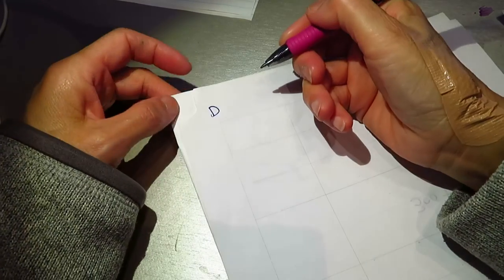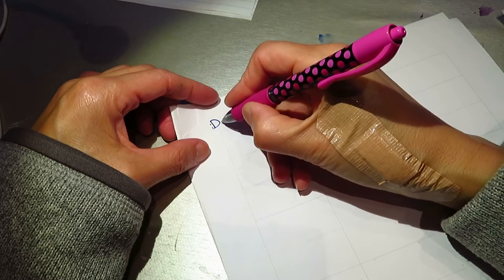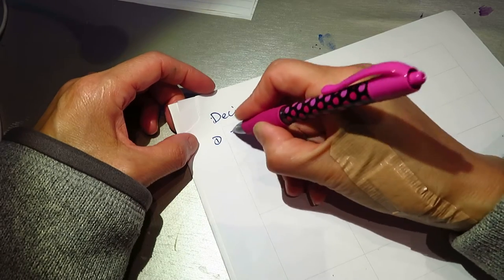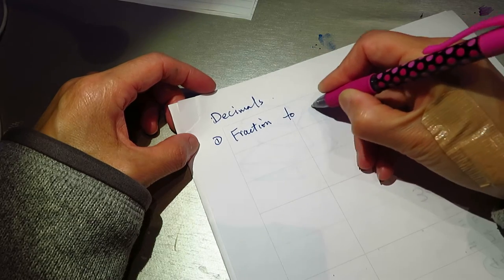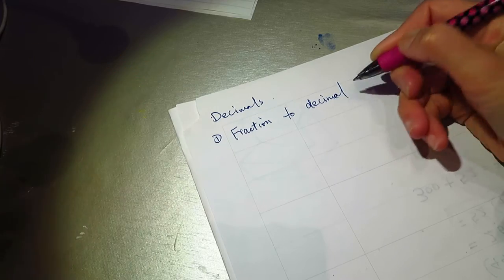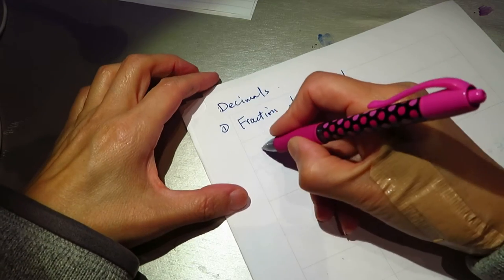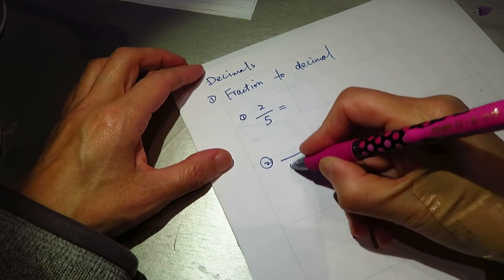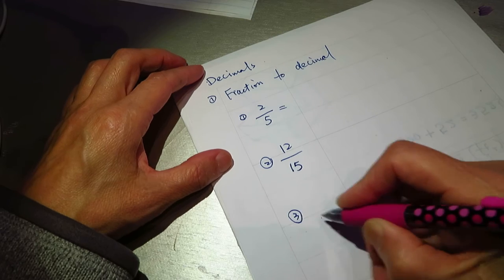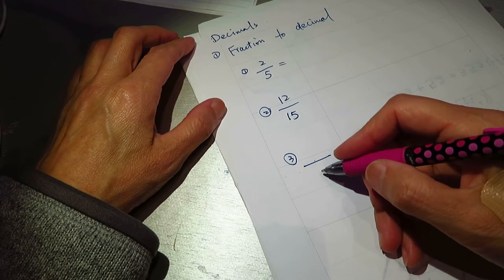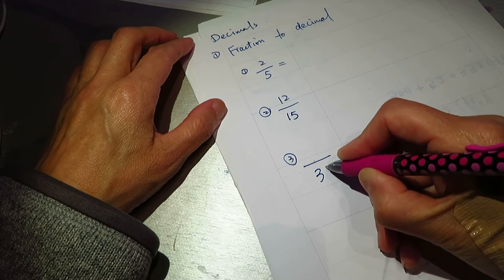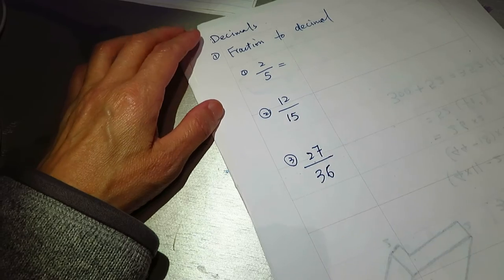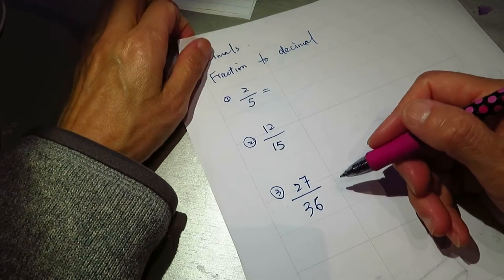Hello dear friends, let's do some exercises about decimals. The first one we will do is fraction to decimal. So the first one is 5 over 2, the second one is 15 over 12, the third one is 27 over 36. I always say it in the Chinese way, okay.